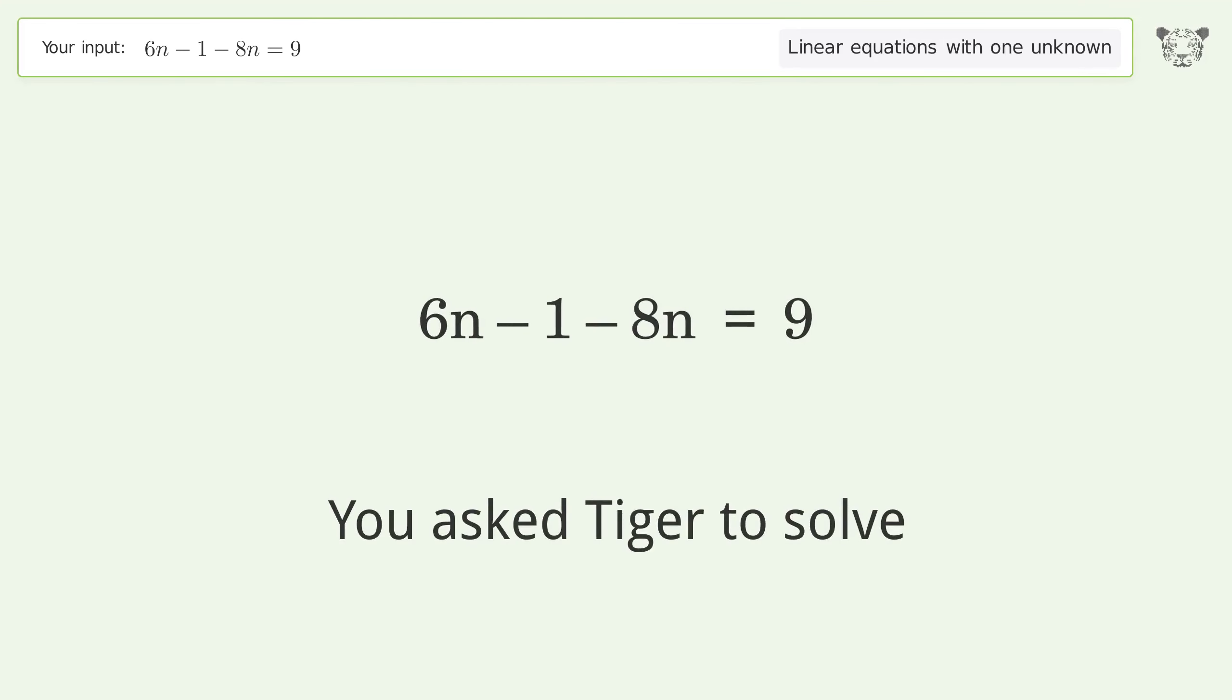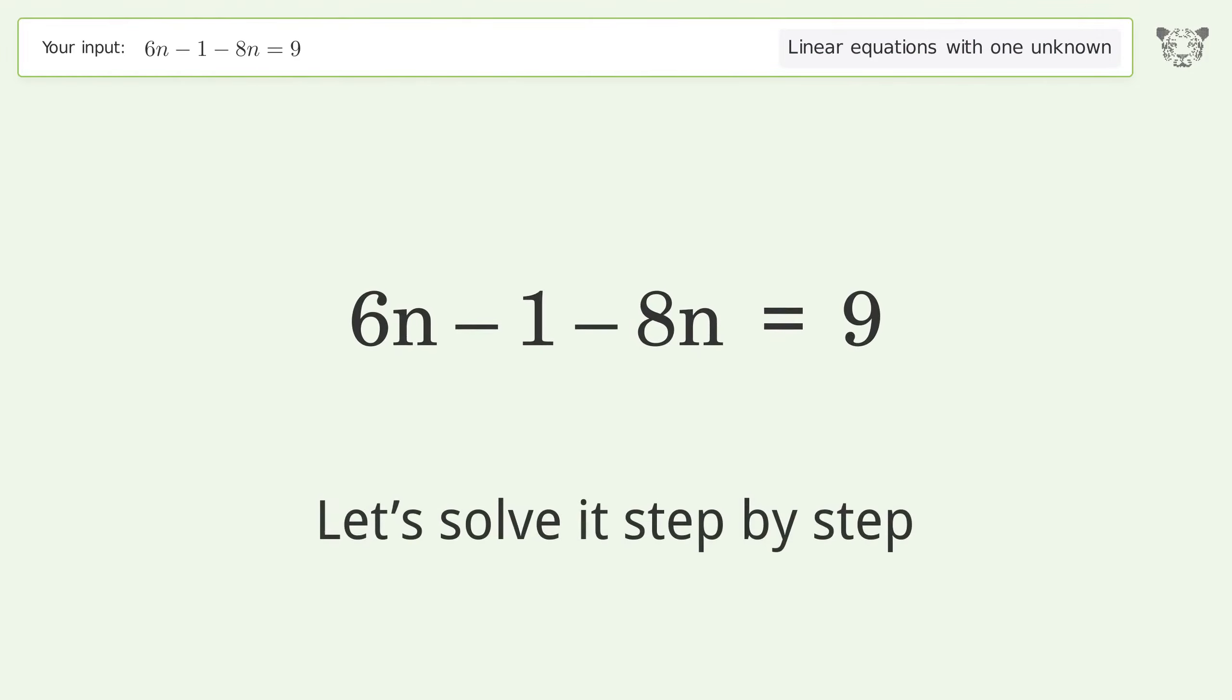You asked Tiger to solve this. This deals with linear equations with one unknown. The final result is n equals negative 5. Let's solve it step by step.